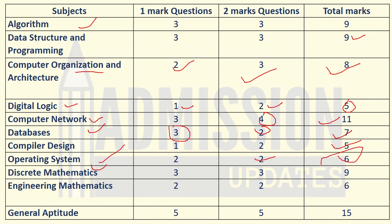For Discrete Mathematics, three one-mark questions and three two-mark questions were asked, totaling nine marks. For Engineering Mathematics, two one-mark questions and two two-mark questions were asked, totaling six marks.